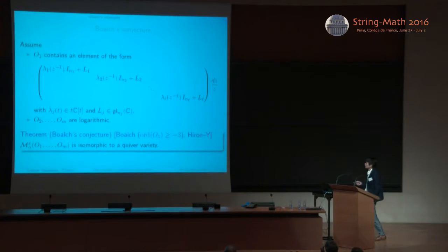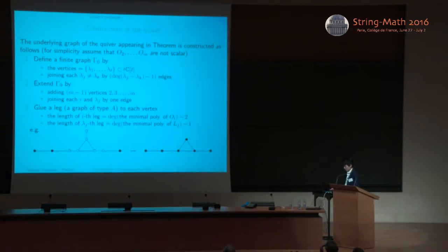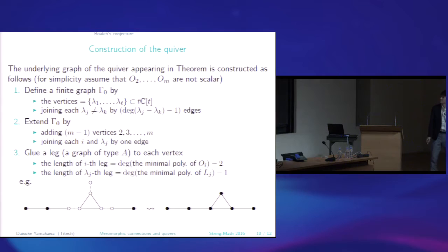Now the following is Boalch's conjecture proved by Hiroe and myself. So in this case, also in this case, the polar part manifold is isomorphic to a quiver variety.